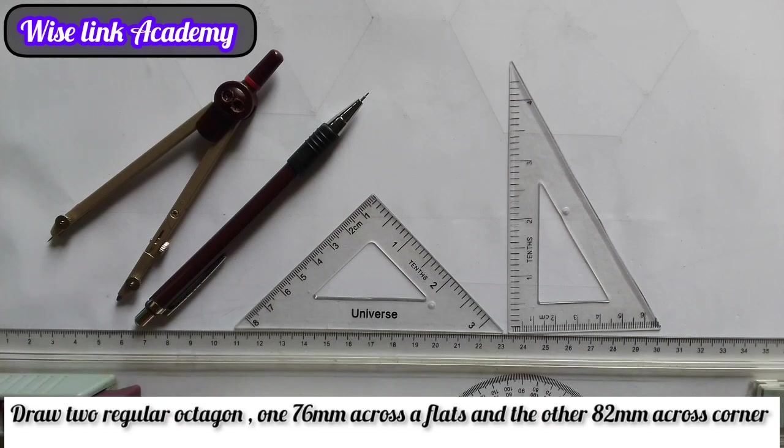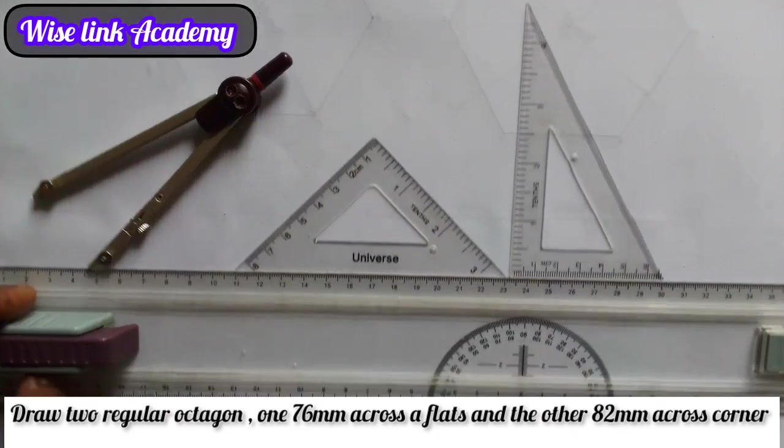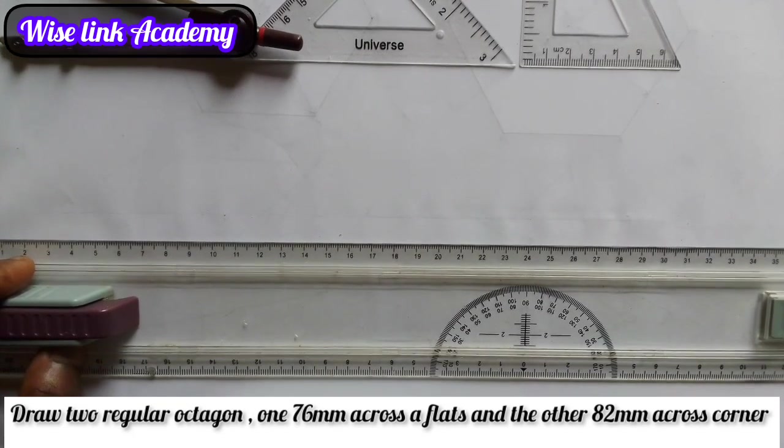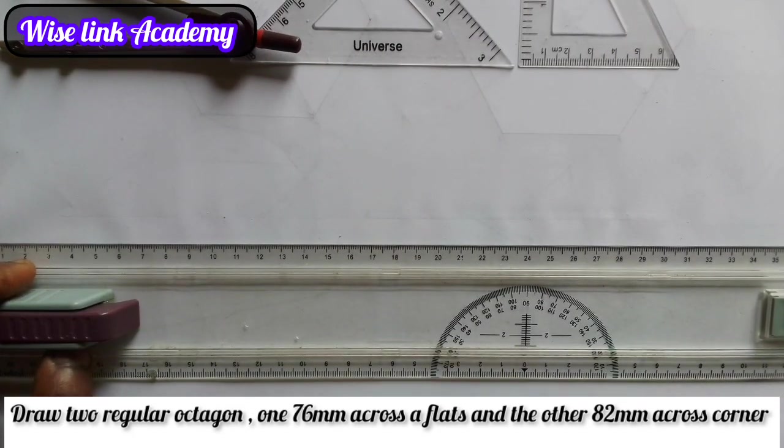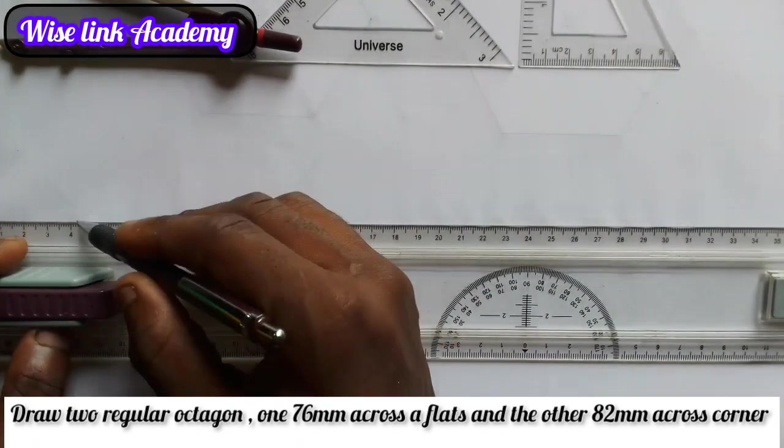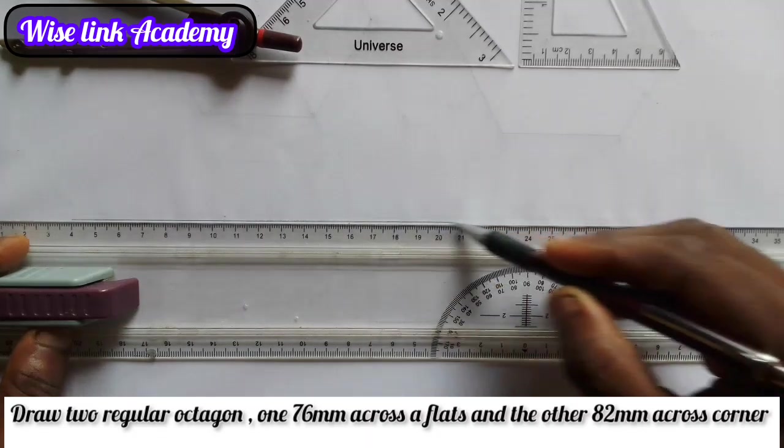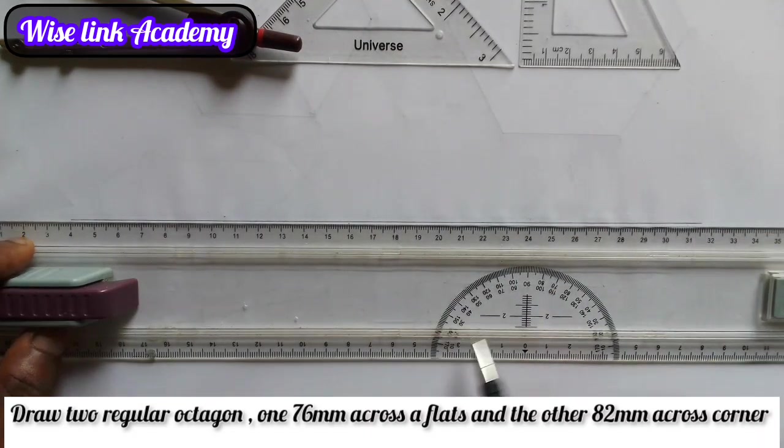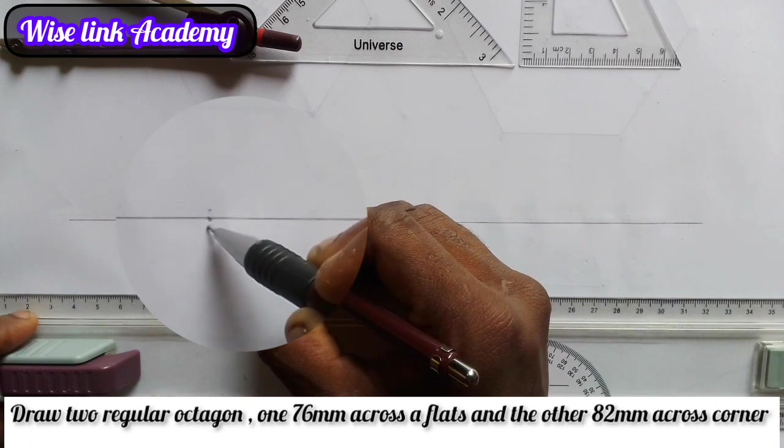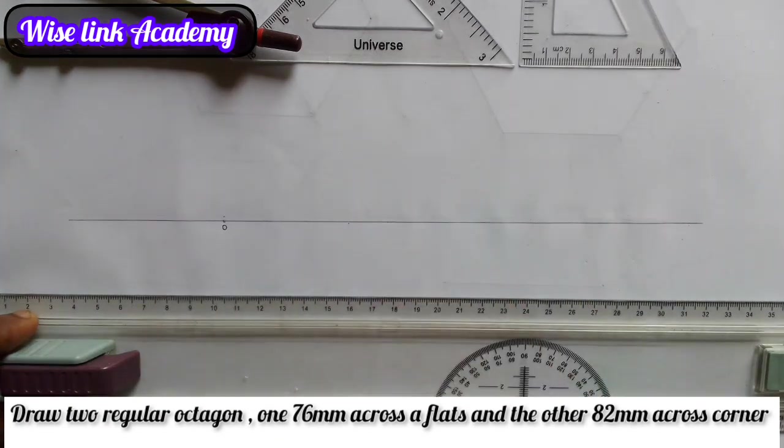Now my first task here is to draw a center line. I'll pick my T-square this way and draw a center line. Let me draw it down this way. I'll pick a point, let me pick this point here, and call it point O for the first one.